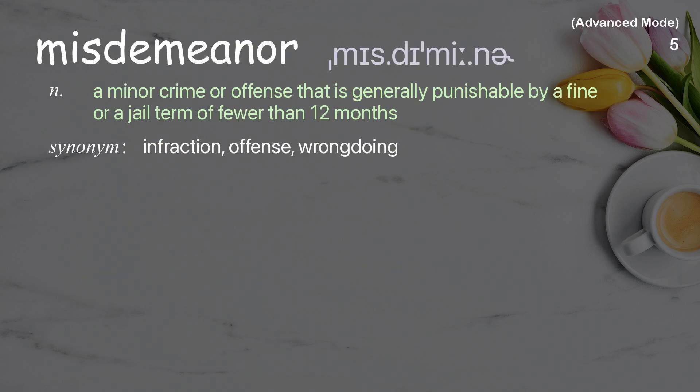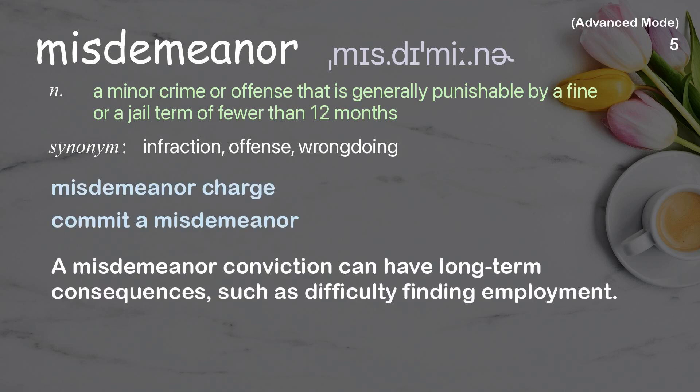Misdemeanor. A minor crime or offense that is generally punishable by a fine or a jail term of fewer than 12 months. Examples: misdemeanor charge, commit a misdemeanor. A misdemeanor conviction can have long-term consequences, such as difficulty finding employment.